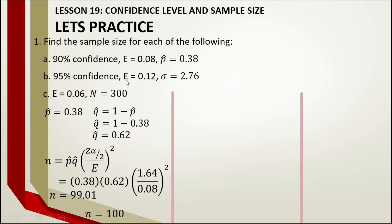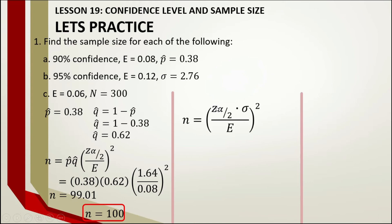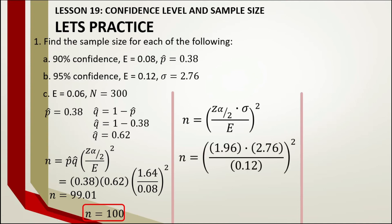For the second practice problem, the given includes a population standard deviation, so we use the formula for population mean. The confidence level is 95%, so the confidence coefficient is 1.96. The margin of error is 0.12. Applying the formula and computing, the result is 2,032.21. Rounding up, the final answer is 2,033. Whenever there is a decimal and it does not come out exact, always add 1.